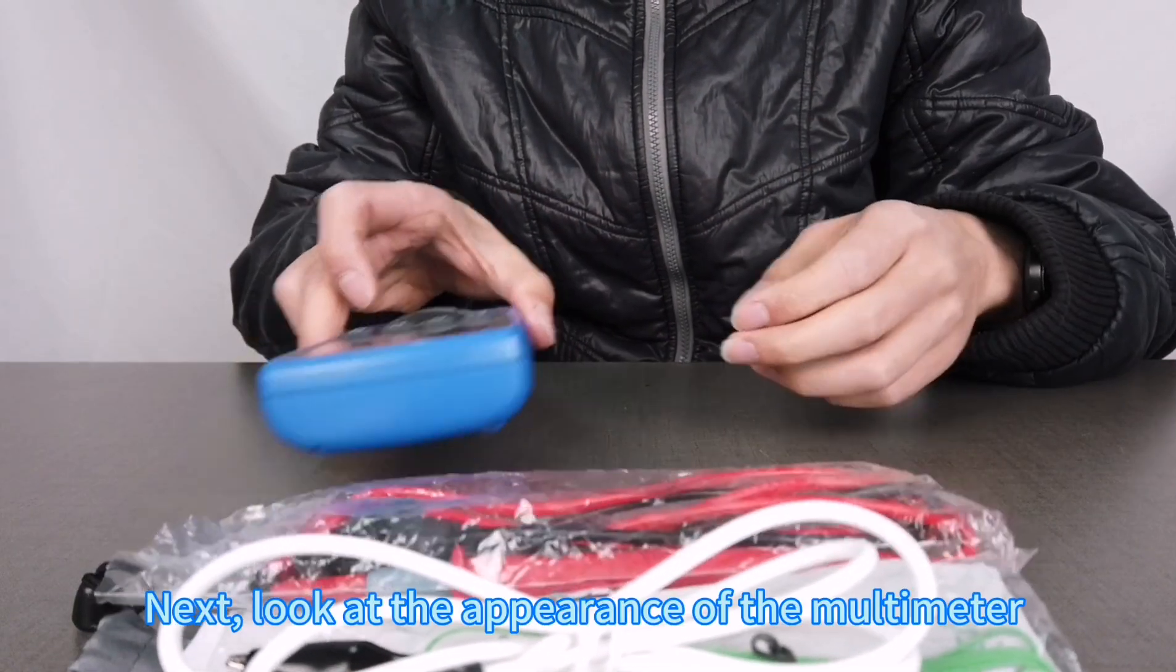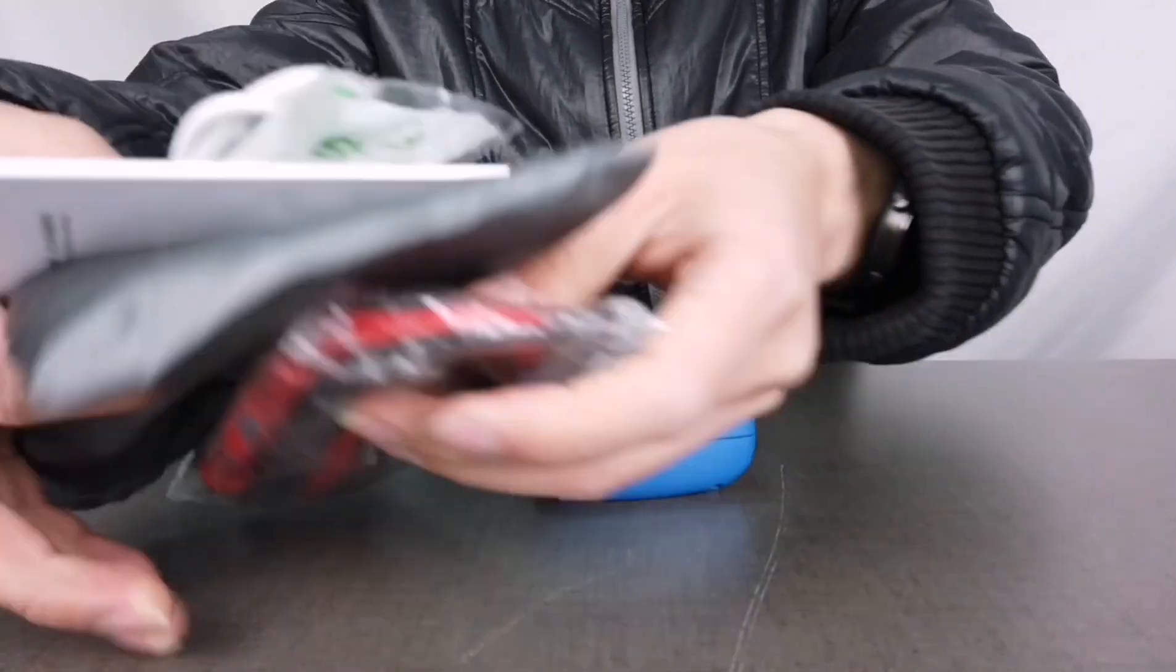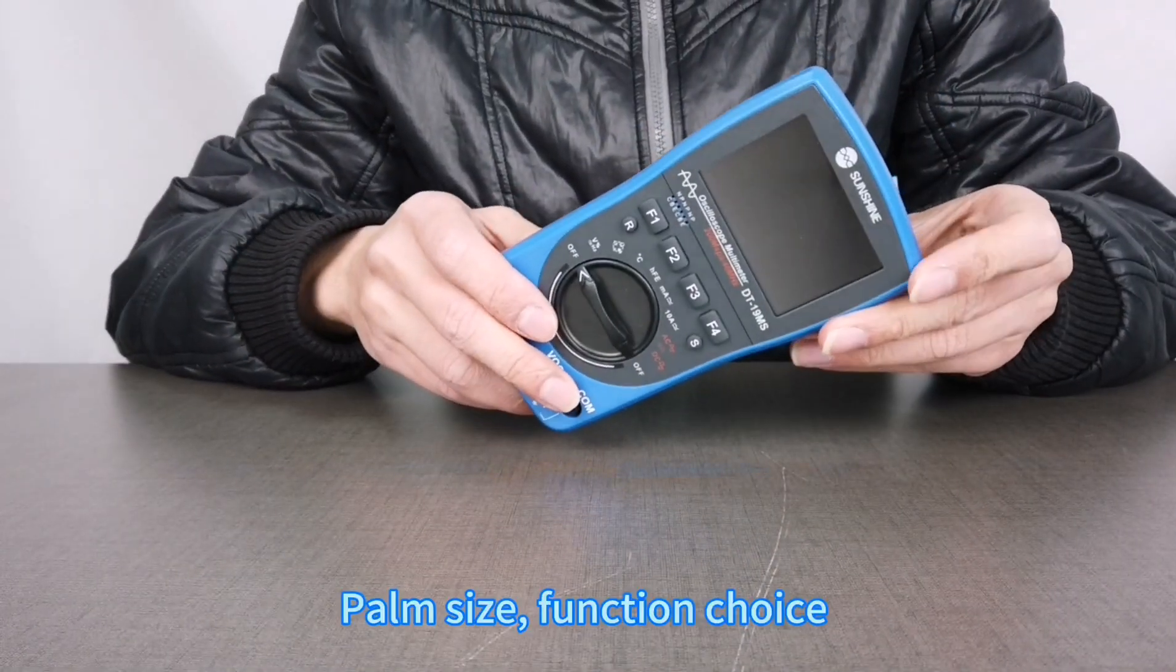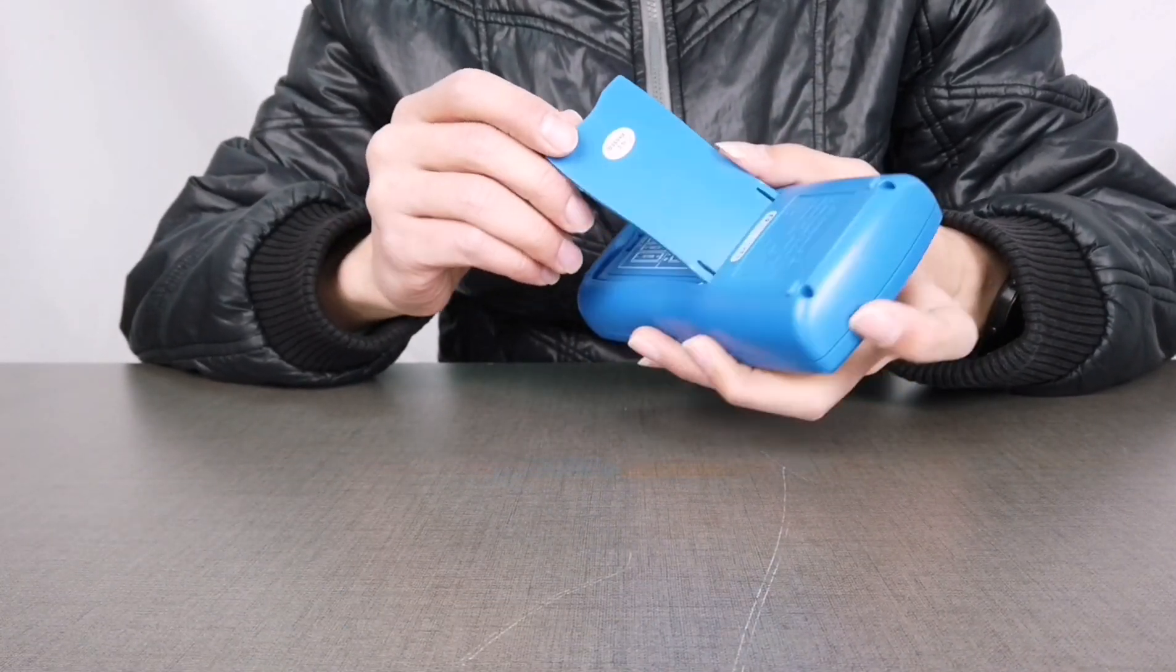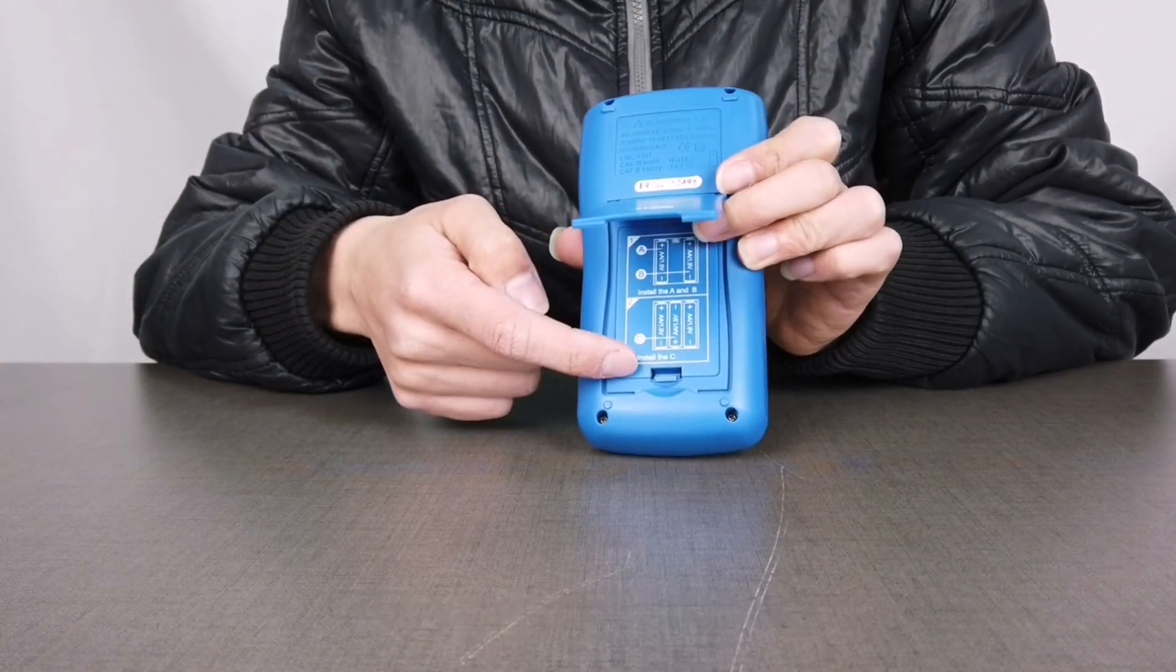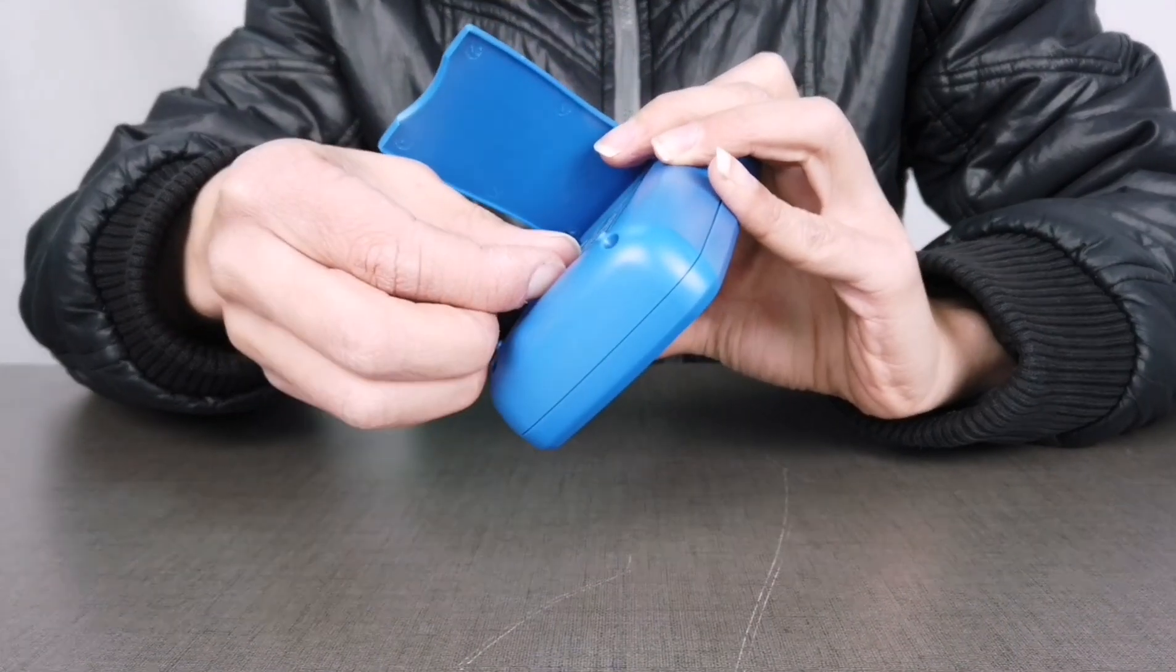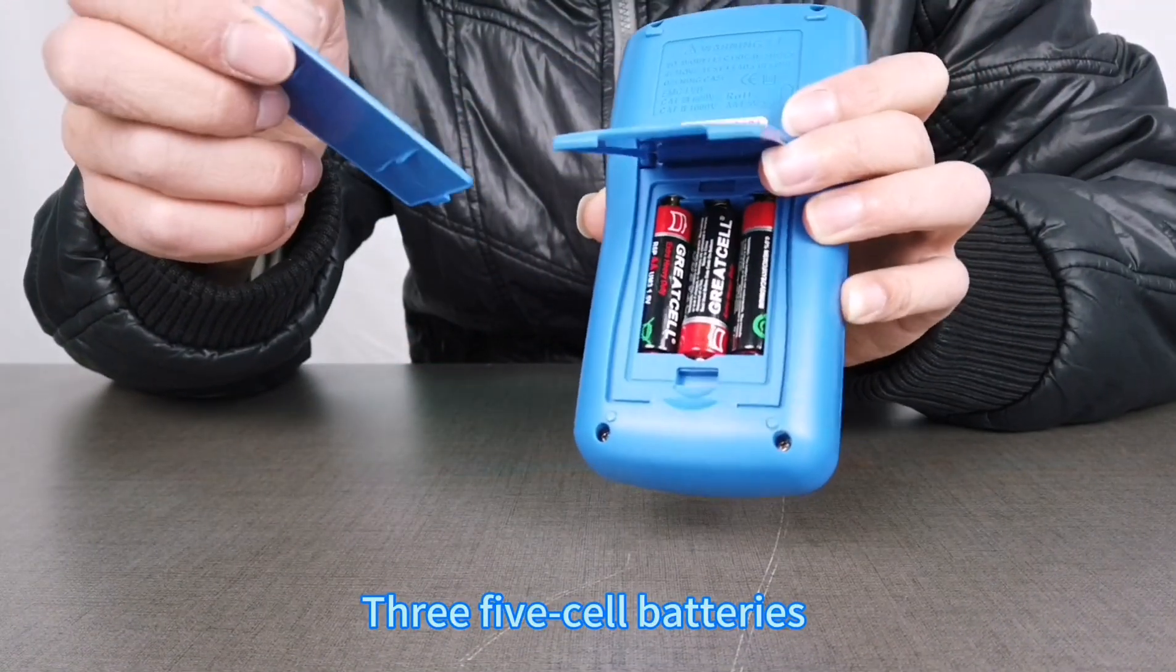Next, let's look at the appearance of the multimeter. It's palm-sized with a function selector and is powered by three AA batteries.